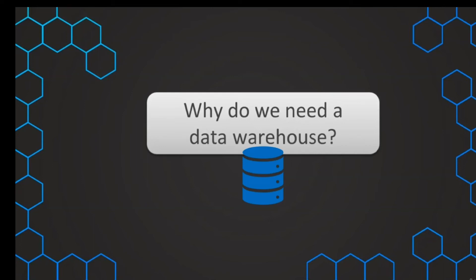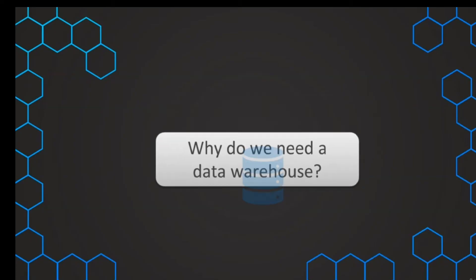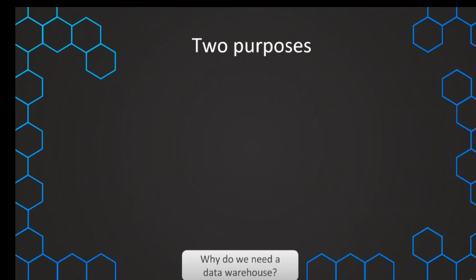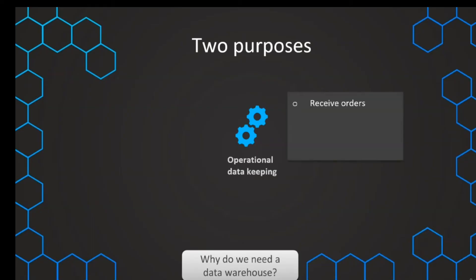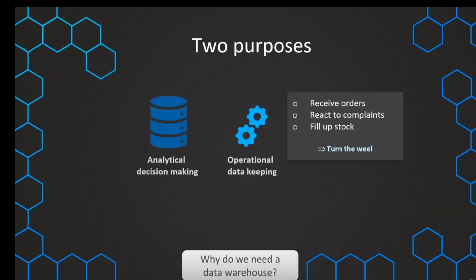So let's kick things off with the question: why do we actually need a data warehouse in our company? To understand that, we need to look at the two different purposes of how and why we use data in a company. The first and obvious one is for operational purposes — we want to use the data to receive and fulfill orders, receive complaints and react to them, and fill up our stock, basically doing all the things necessary to keep our company operating and keep the wheel turning.